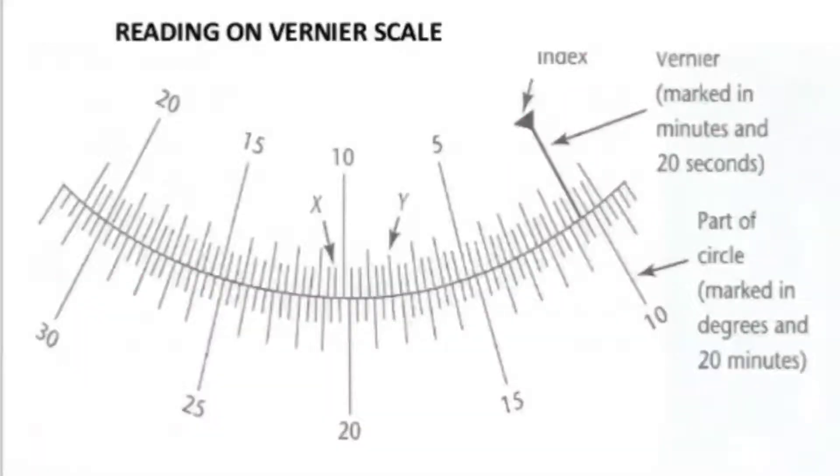So this is the vernier scale reading. You can see the inner and the outer circle here. If you take any reading here, if you take from 15 to 20, it is separated by 5 parts.